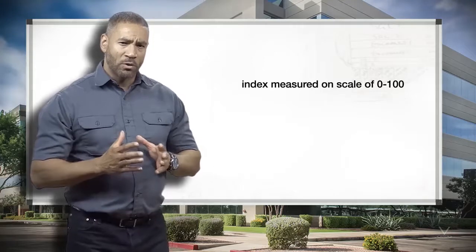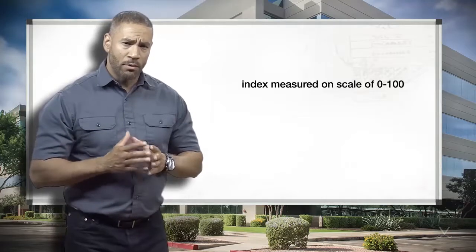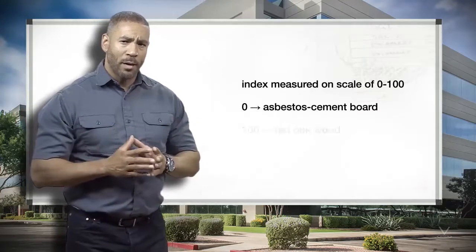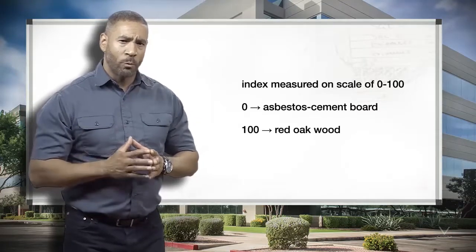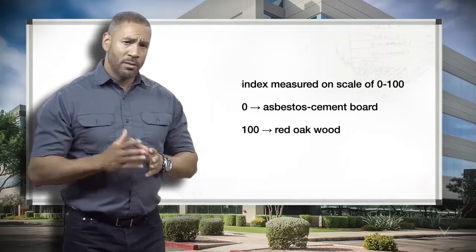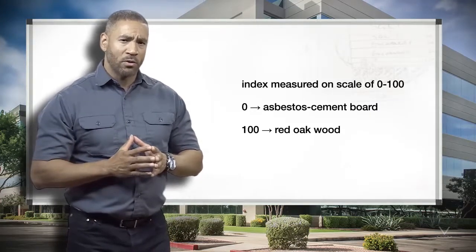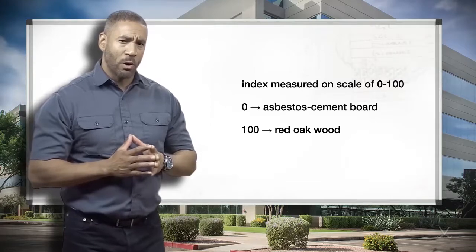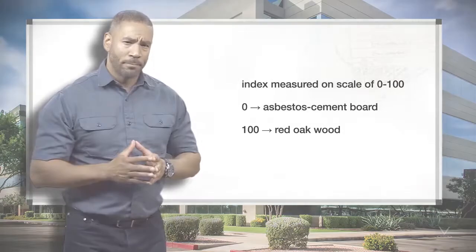The flame spread rating is an arbitrary scale to allow relative comparisons among materials. The index is measured on a scale of 0 to 100, with 0 being asbestos cement board and 100 being red oak wood. This is determined by a standardized test using a specific amount of test material and a controlled fire.